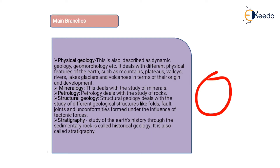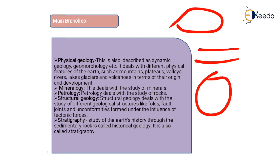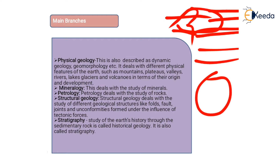Stratigraphy: the earth's crust is made up of all three types of rocks arranged in layers, one above another. In stratigraphy, we study which rock formed first, which formed later, what composition is present, and the age of the formations.